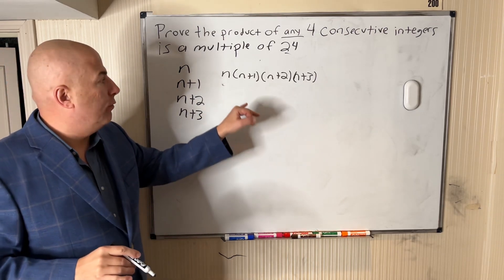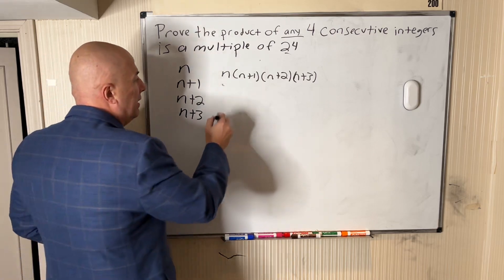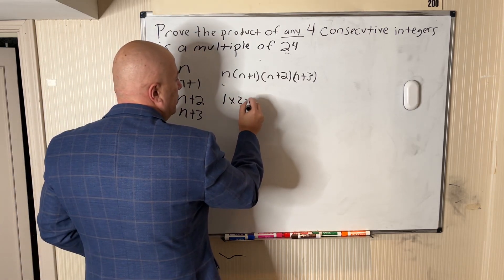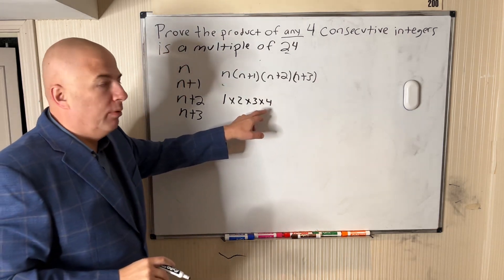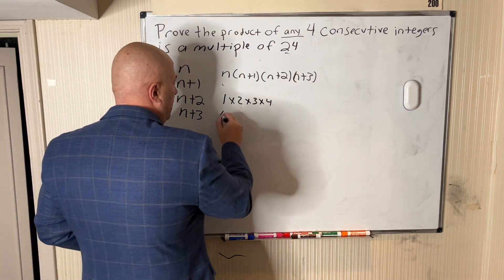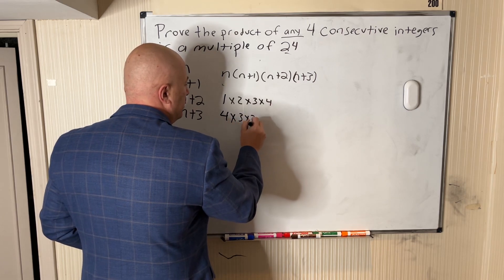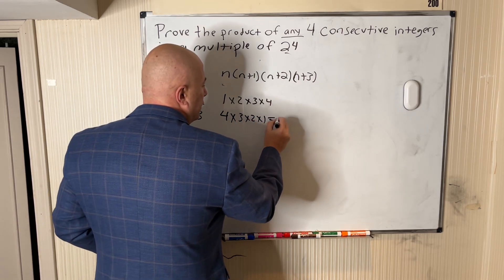If we start with the simplest case of 1 as our first integer, we've got 1 times 2 times 3 times 4. But reverse this and what do you get? We got 4 times 3 times 2 times 1, which is 4 factorial.